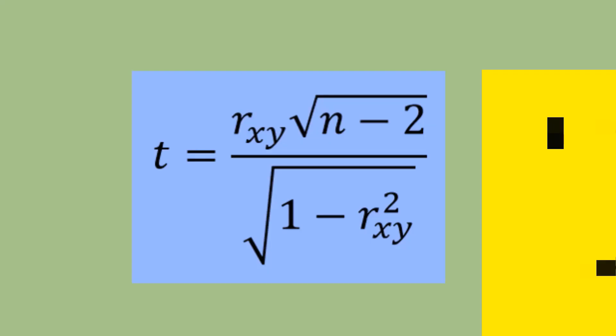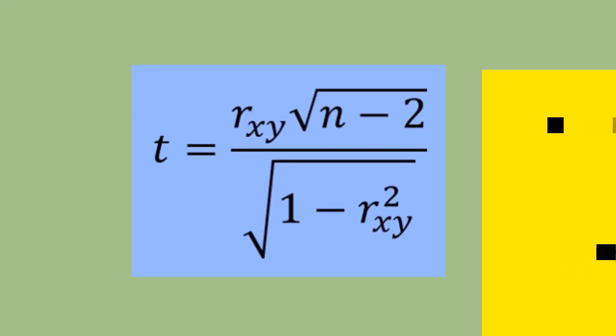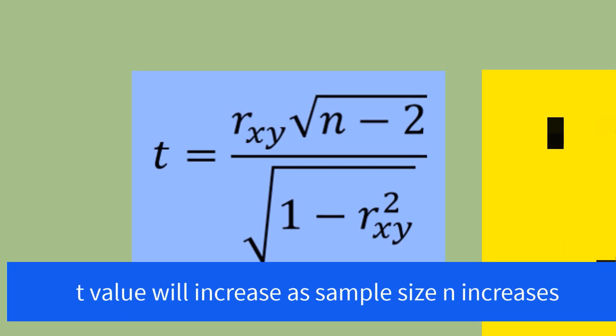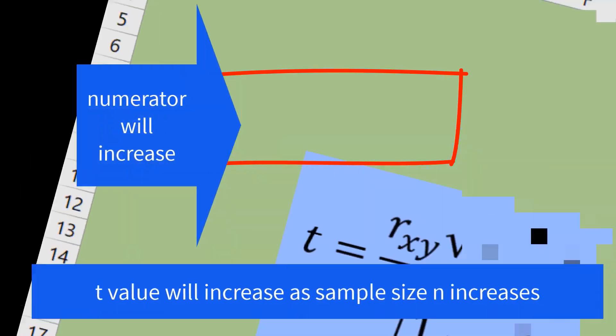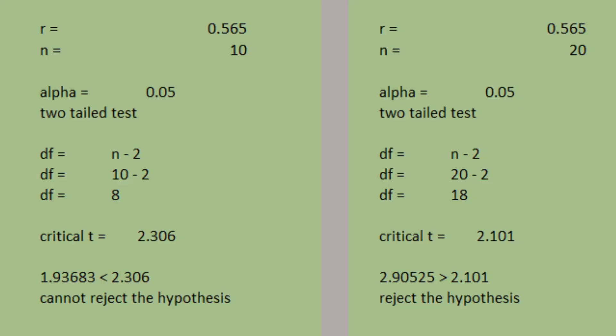Looking at the formula for t-value, the t-value will increase as sample size n increases because the numerator will be bigger. The two sample datasets have the same sample correlation coefficient of 0.565.